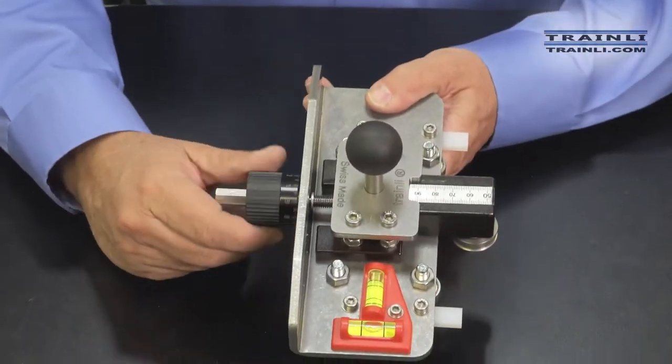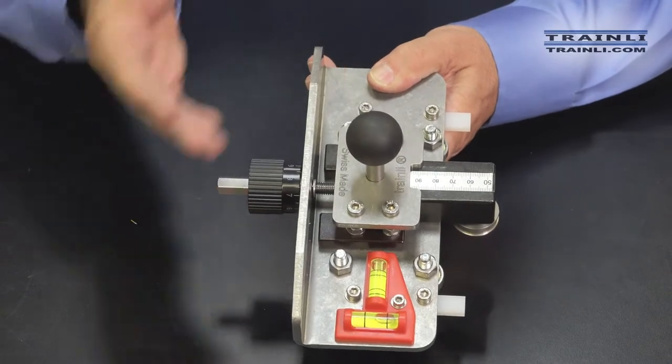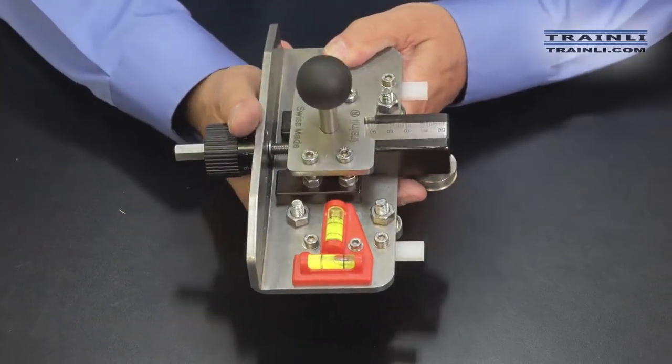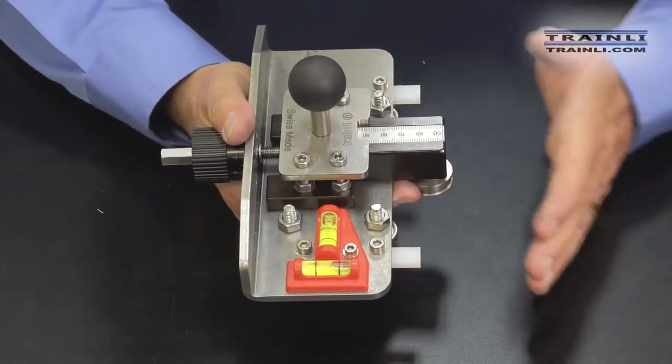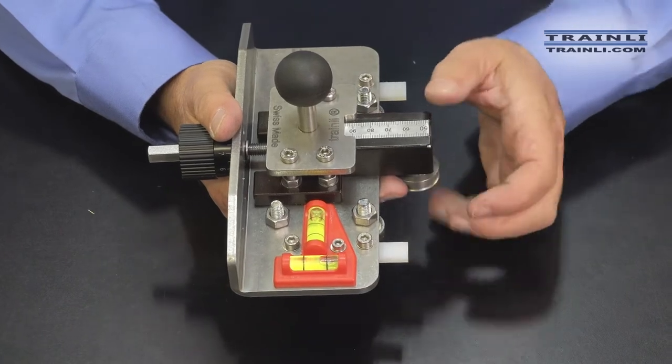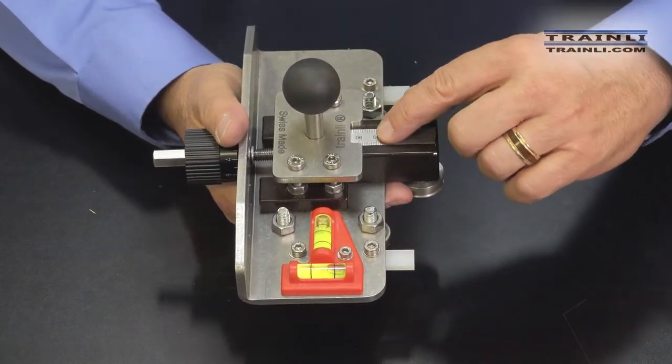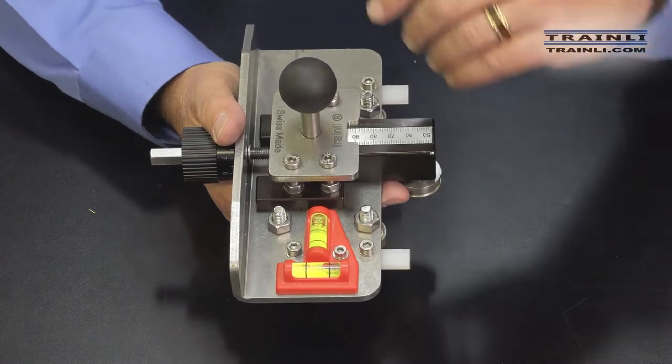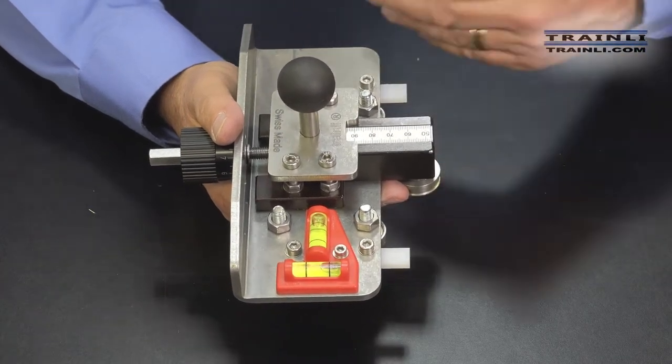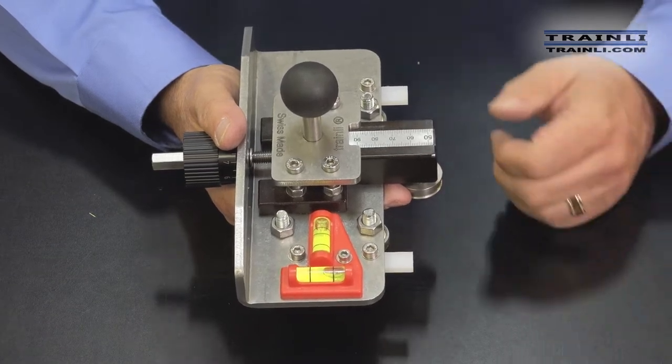And then, as you tighten this up, this goes ahead and creates the curve in the rails. And once you've gotten the right radius or curve that you want for your rails, you can go ahead and remember whatever this numeric value is, and use that to replicate that same curve again in the future.